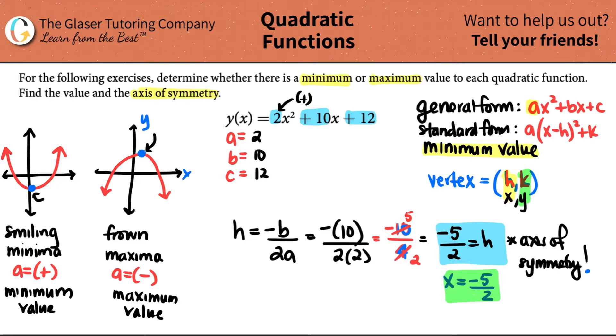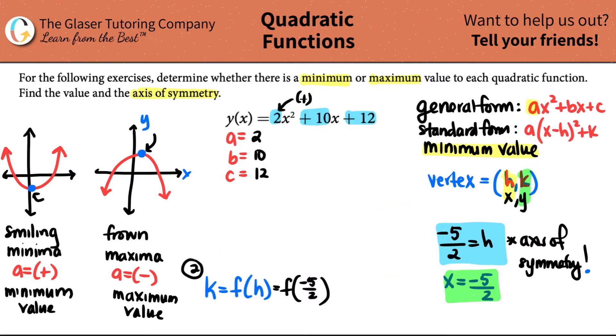Now we just got to find out what that value is. We still got to find out the value of the minimum or the maximum. That is your k value. How do we find a k value? The k value is f(h). That's why you will always solve for h first, and then you'll solve for k. What k is, is you're just taking your h value and plugging it into your formula. So this would be f(-5/2). That means that you're going to be plugging in -5/2 for all of the x values in your graph.